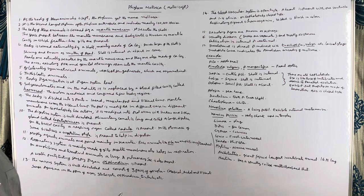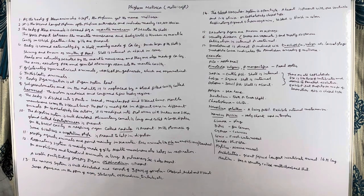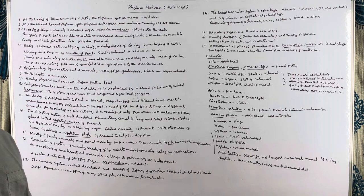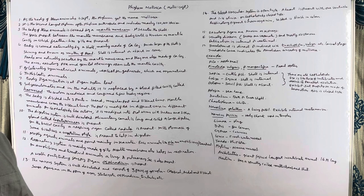The space present between the mantle membrane and the body wall is known as the mantle cavity. Gills are present in the mantle cavity, and the digestive system, excretory system, and reproductive system all open into the mantle cavity.